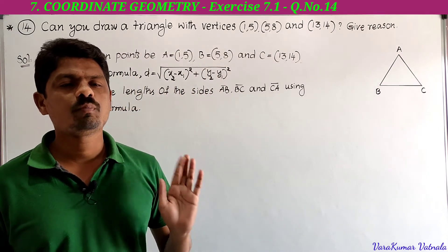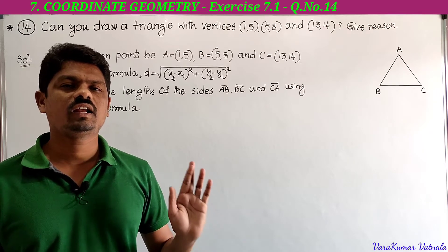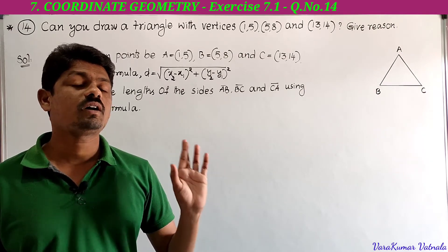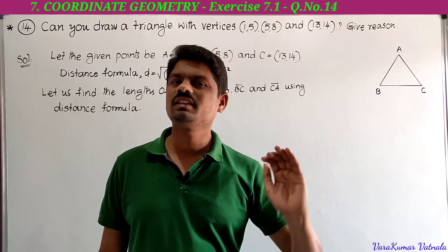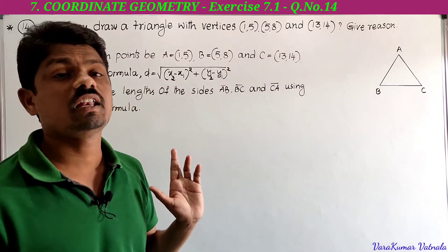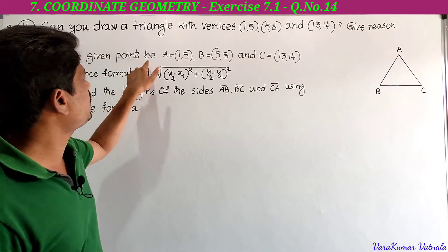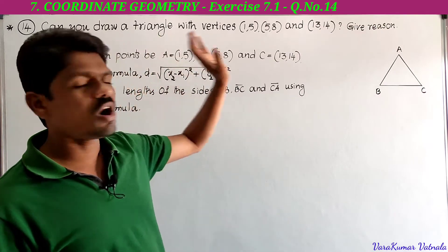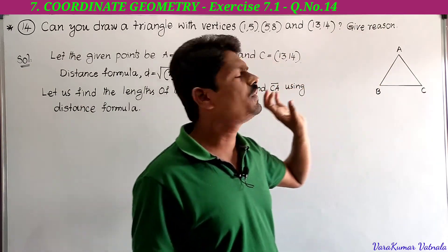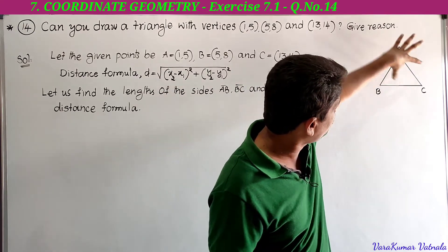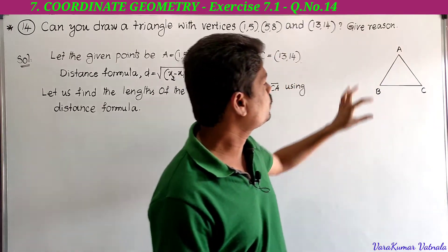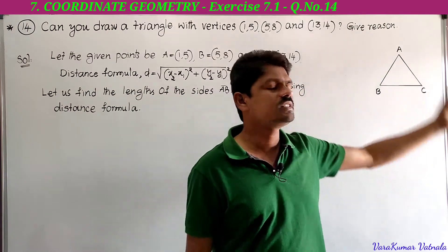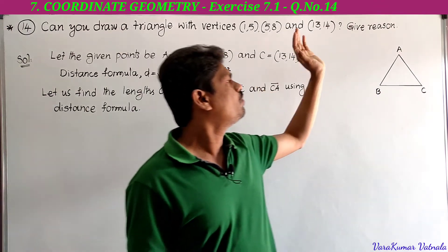There are two properties of a triangle we can use to decide whether it forms a triangle or not. The key property is: the sum of the lengths of any two sides of a triangle is greater than the third side. So we have to check this by finding the lengths of the sides using the distance formula. Let the given points be A = (1,5), B = (5,8), and C = (13,14).